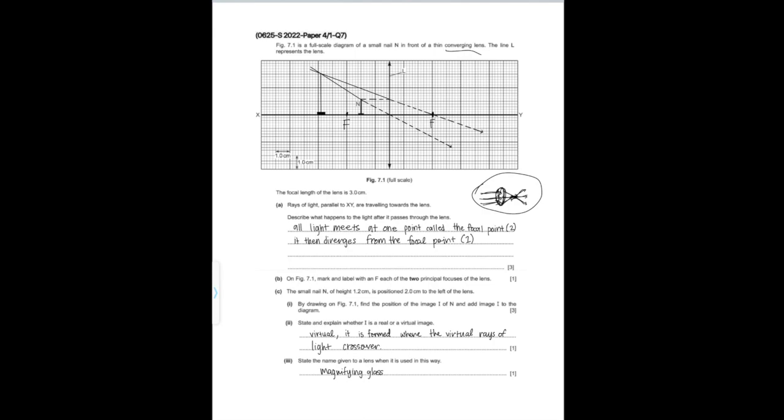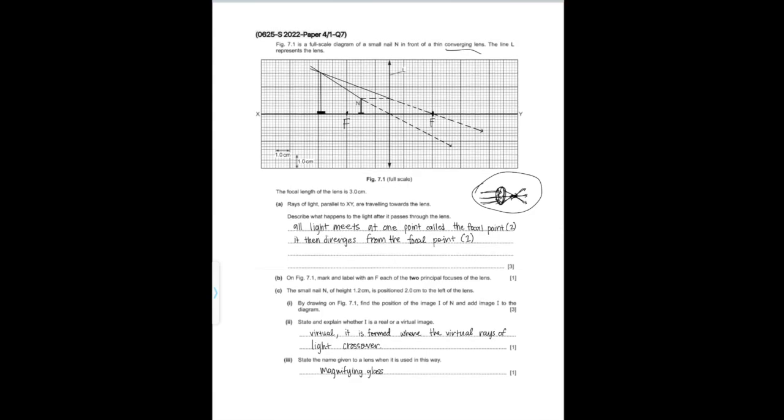Part B says: on Figure 7.1, mark and label with an F each of the two principal focuses of the lens. Since the focal length is 3 cm, the principal focuses are 3 cm away from the lens on each side, according to the units given.